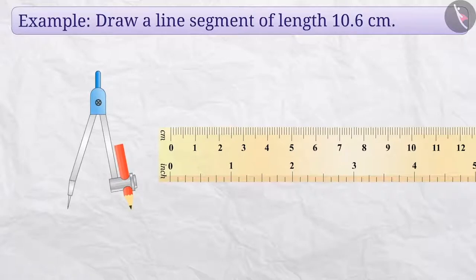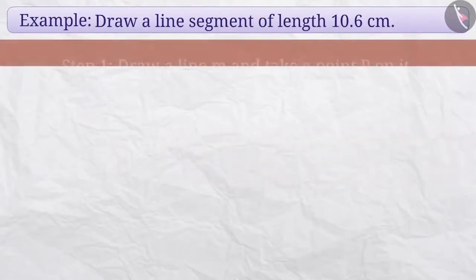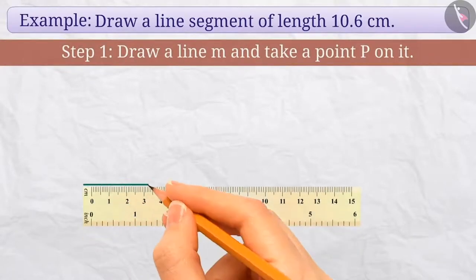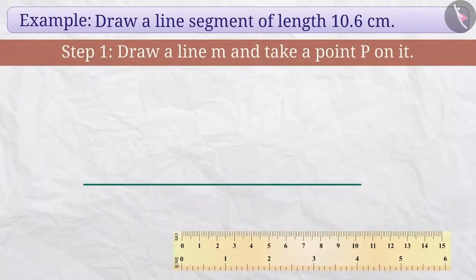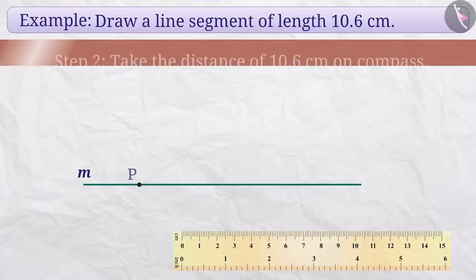We can also draw line segments using a ruler and compass. Step 1: First of all, we will draw a line and name it line M. Then we will take a point on the line and name it P.